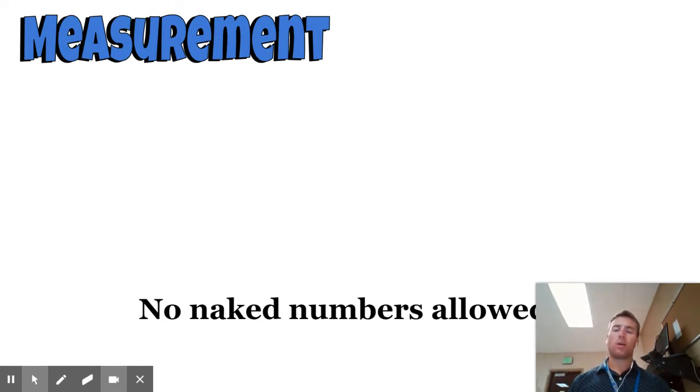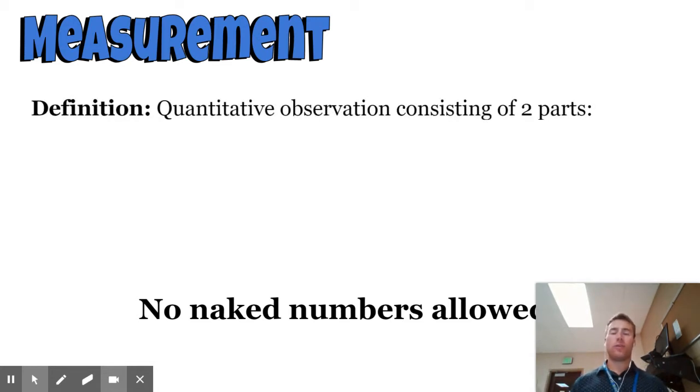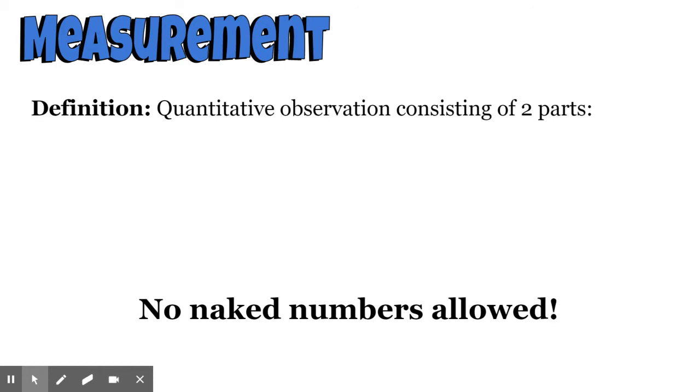When we talk about metric units, we're talking about measurements. There are two parts that are really important to every measurement. A measurement is a quantitative observation consisting of two parts.